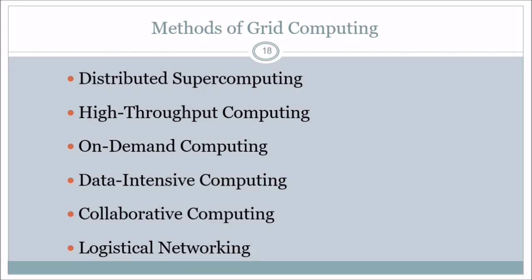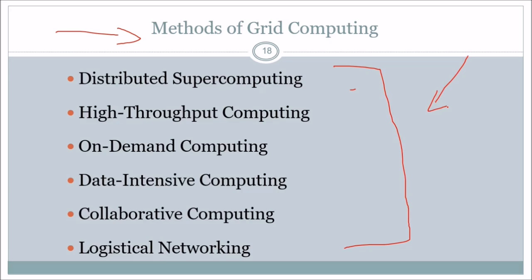The methods of grid computing are: distributed supercomputing, high throughput computing, on-demand computing, data intensive computing, collaborative computing, and logistical computing. These are all the methods of grid computing, and this is how distributed computing finds its difference from grid computing.